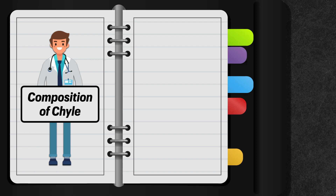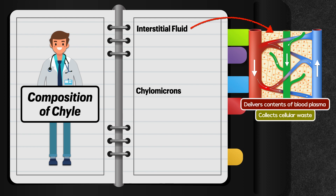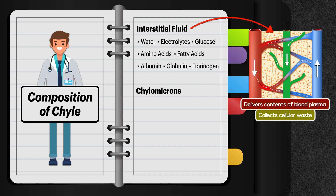Now that we've explored the functions of the lymphatic system and distinguished chyle from lymph, we're going to look a bit closer at the composition of chyle. Even though data for the composition of chyle is limited, the fact that it's derived from interstitial fluid and chylomicrons is revealing. Interstitial fluid exists outside of the cells of tissues. It provides a way to deliver contents of blood plasma to individual cells while also collecting cellular waste produced as a byproduct of metabolism. It's mostly made up of water, which serves as a solvent for nutrients like electrolytes, glucose, amino acids, and fatty acids, proteins like albumin, globulin, and fibrinogen, and other vitamins and minerals.